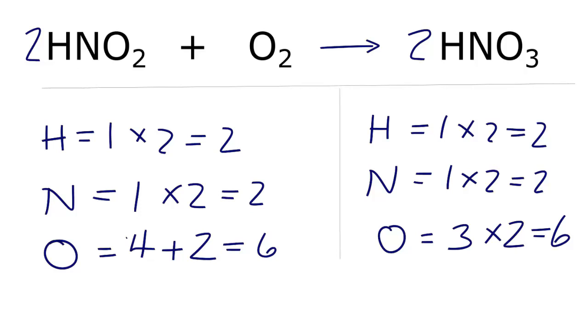So now everything on both sides of the equation is equal. We're obeying the law of conservation of mass. And the equation HNO2 plus O2 yields HNO3 is balanced. This is Dr. B and thanks for watching.